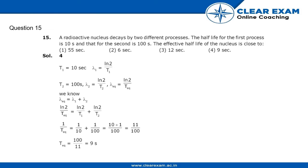Hello guys, we have a question here that says a radioactive nucleus decays by two different processes. The half-life for the first process is 10 seconds, and that for the second process is 100 seconds. We have to find the